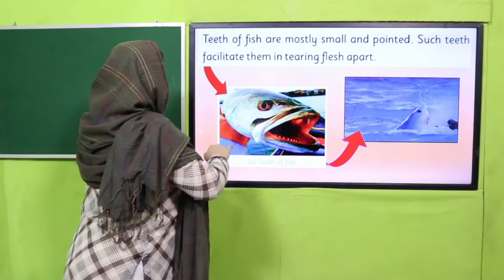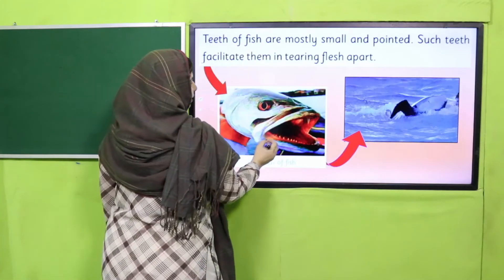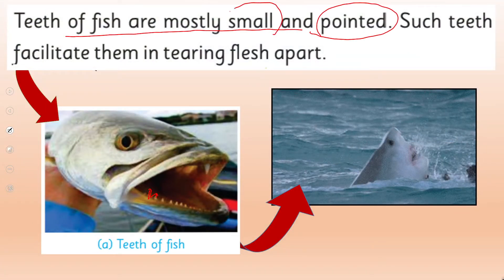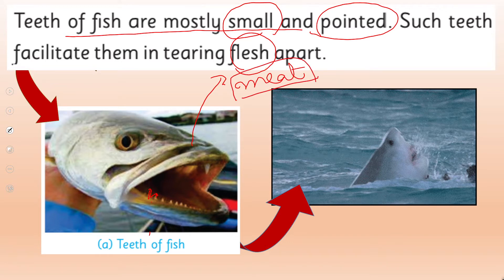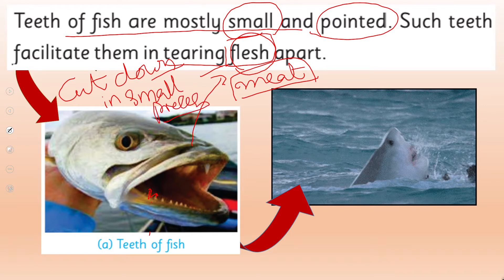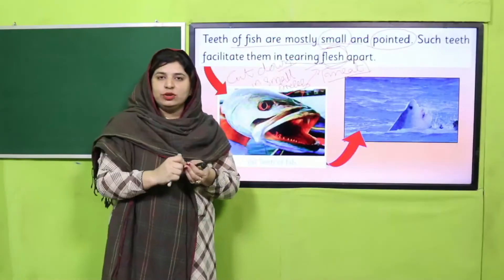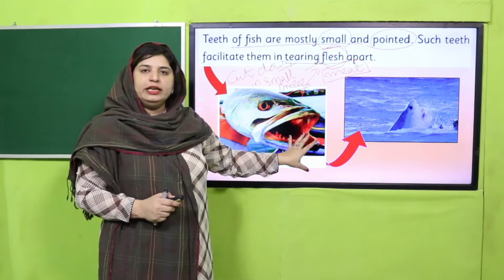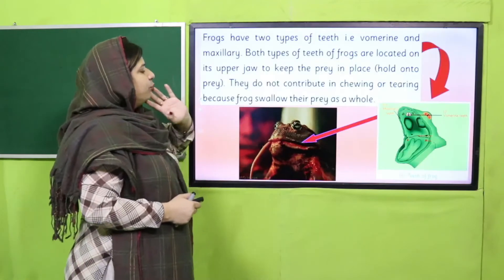This is a fish. You can easily see how the fish catches its prey. Fish have mostly pointed and small teeth — pointed teeth, also called no-keel teeth. Because most of the time, fish eat flesh, meat, or other fish and animals present in the aquatic environment. Fish need to tear that flesh — to cut down in smaller pieces. This is the way fish are able to cut, bite, and chew their food, which is mostly flesh.